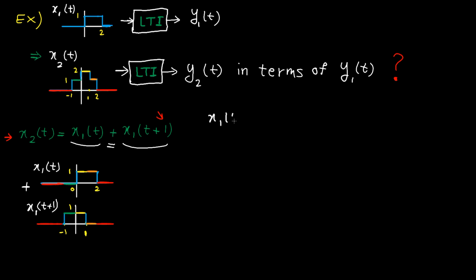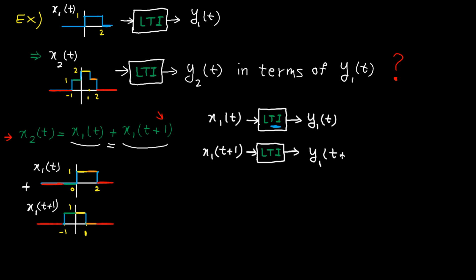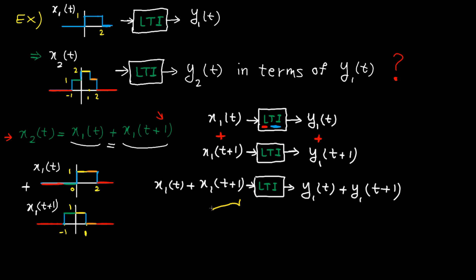We know if X1(T) goes through the LTI system, the output is Y1(T). This is given. We also know the system is time-invariant. A quick reminder from the previous tutorial: a system is time-invariant if a time shift in the input results in the same time shift in the output. So if we shift the input by 1 unit, the output gets shifted by 1 unit. Also, we know the system is linear. For a linear system, a linear combination of inputs results in a linear combination of outputs. So if this goes through the LTI system, the output is this. This is basically X2(T) and this is Y2(T) in terms of Y1(T).